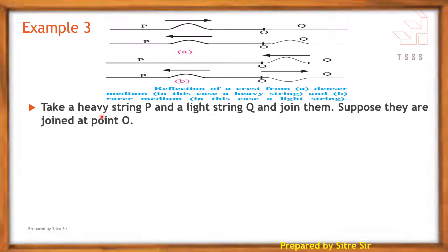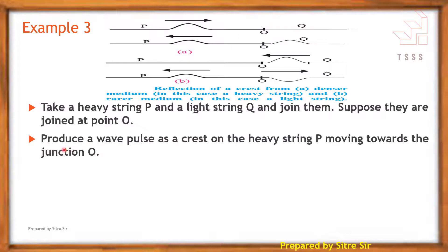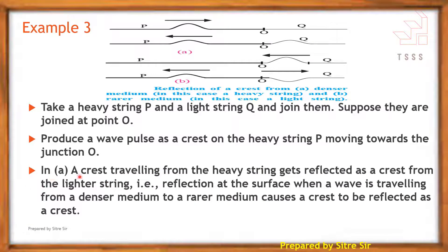Example 3: Take a heavy string P and a light string Q and join them at point O. Produce a wave pulse as a crest on the heavy string P moving towards the junction O. A crest traveling from the heavy string gets reflected as a crest from the lighter string. That is, when a wave travels from a denser medium to a rare medium, a crest is reflected as a crest — there is no phase change.